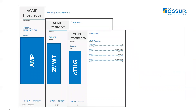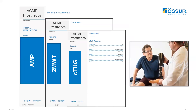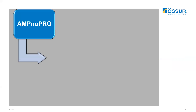Now you have objective data and a baseline of how your patient is performing prior to them receiving their new prosthesis. Let me give you an example of how you can demonstrate the value of your intervention. Let's say you have a new patient and you administered the AMP for this patient, and he got a score indicating he's at the K2 functional level.